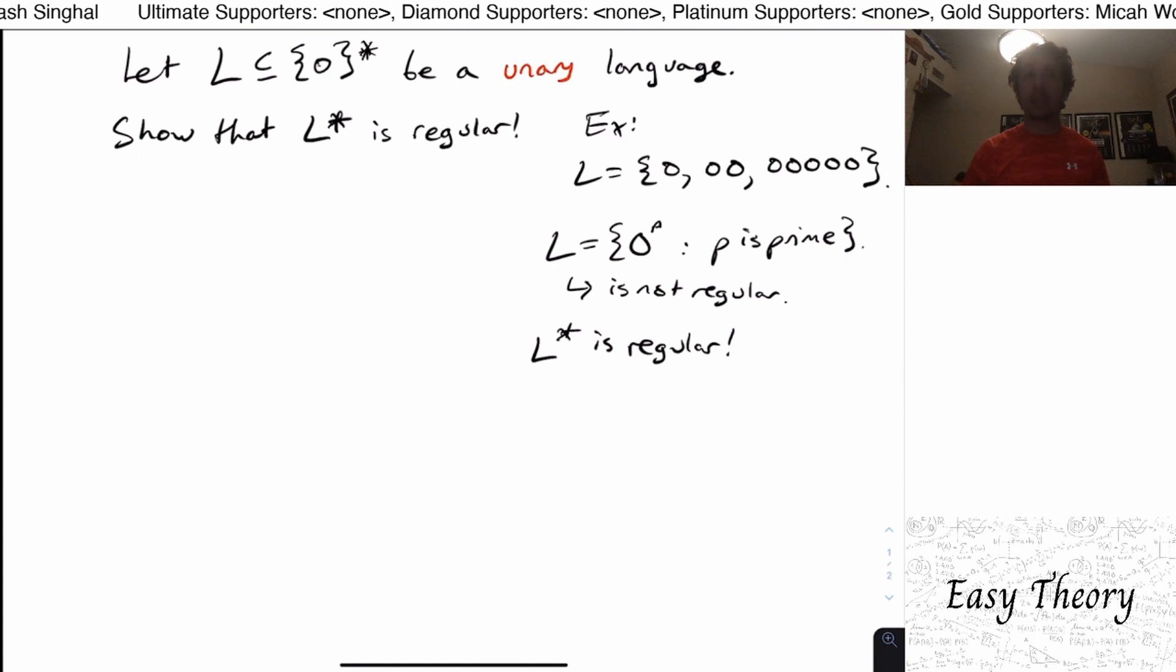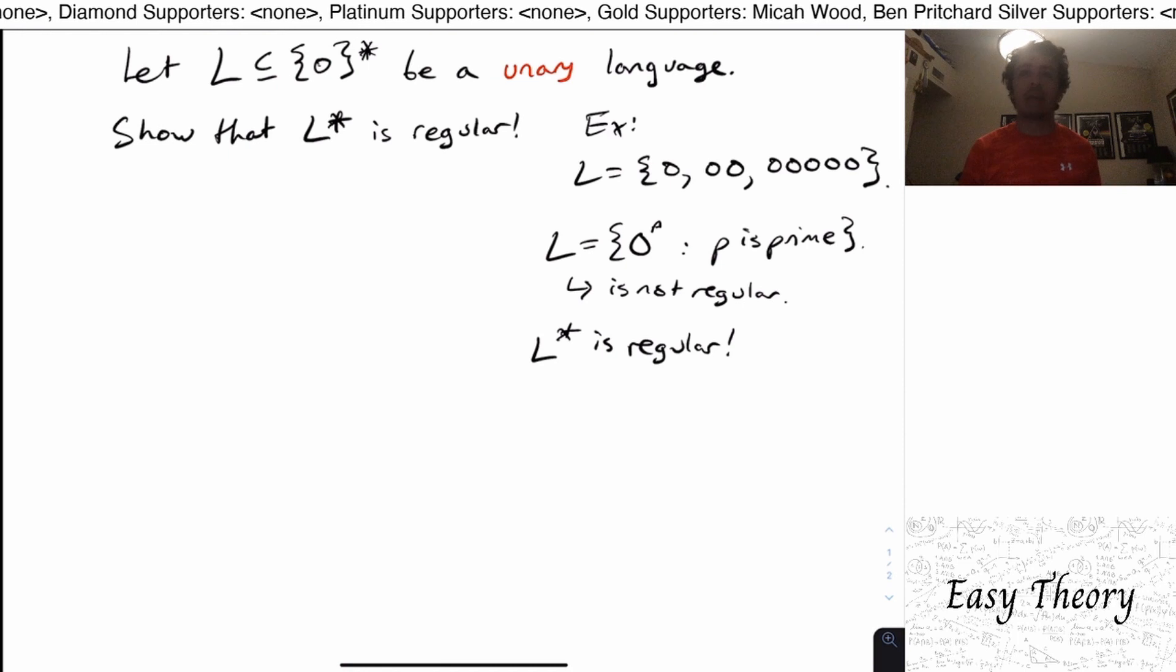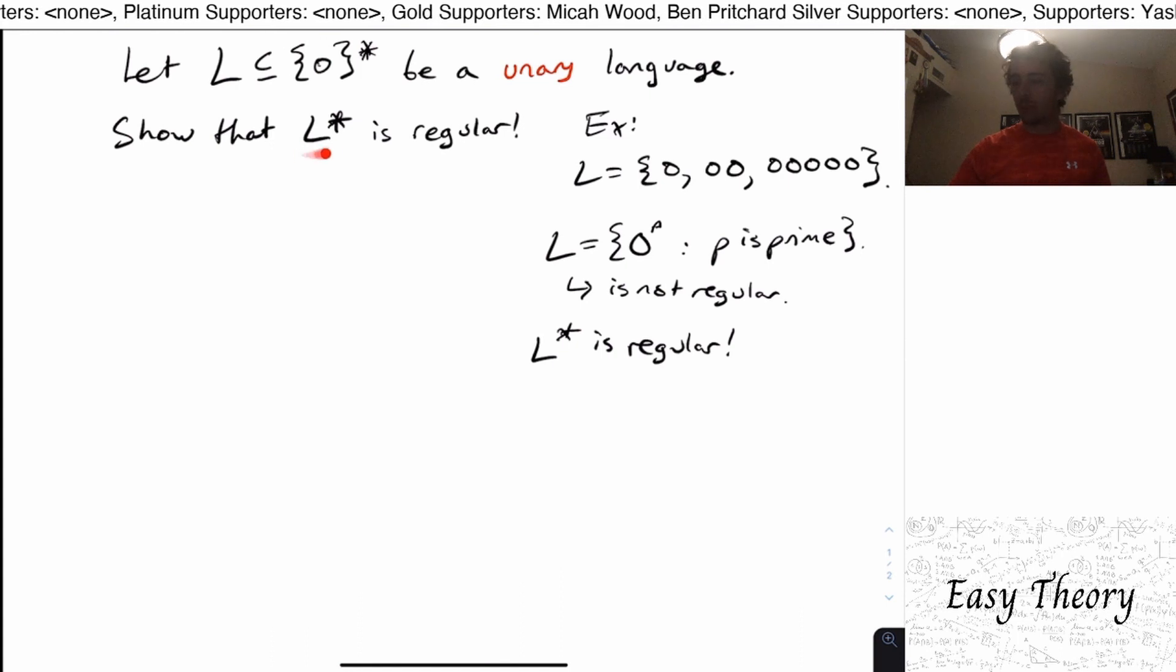And it really tells us that the star operator is not preserving for non-regular languages, non-context free languages, undecidable languages, etc. Every single one of them, any language of any class, when you apply star to it, if it's unary, will always give us a regular language.